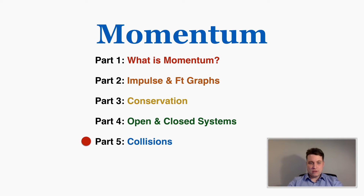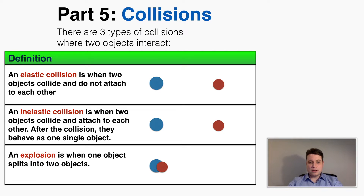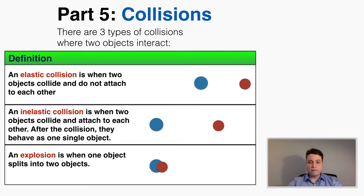This last lecture in the momentum series is about using momentum to predict what will happen in different types of collisions. There are three types of collisions when two objects interact. The first type is an elastic collision — this is when two objects collide and do not attach to each other. They just bounce off of each other. One way to remember this is thinking about elastic things as being bouncy, like elastic bands.